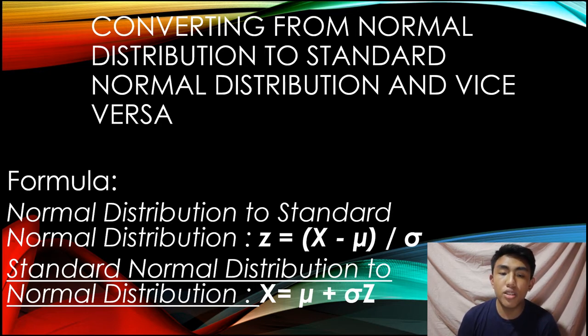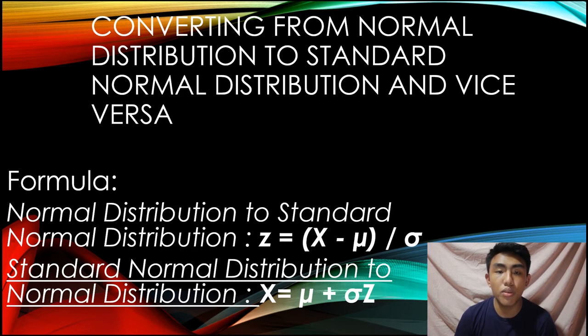So, why convert the two? To easily have an accurate computation of probability through the table of values such as z-tables which are easily accessible online. To have a single table of probabilities that would be used for all values related to it. And to identify the percentage of population.